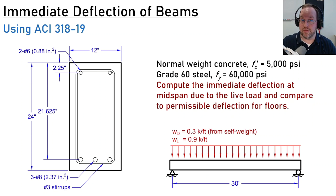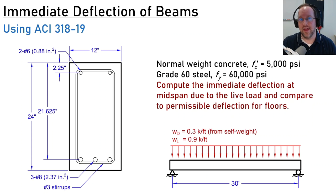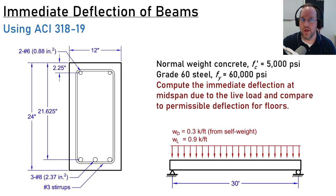Welcome back everyone. In this video we're going to talk about how to compute the deflections of a reinforced concrete beam using ACI 318-19. The goal is to compute the immediate deflections under live load for this particular beam and compare that to the permissible limits according to ACI 318. That raises three questions: what load should we be using, what is the stiffness and how do we calculate that deflection, and what is the permissible limit according to ACI? We're going to answer those three questions before we dive into this example.